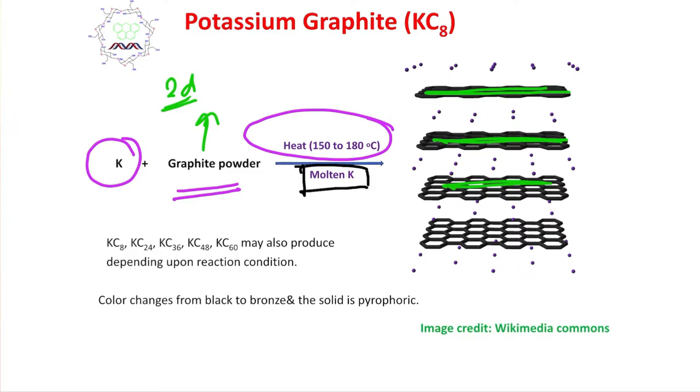I have previously discussed that this graphite molecule can act as an electron reservoir. It can take electrons easily or donate electrons easily. In this case, we are reacting potassium with graphite powder.